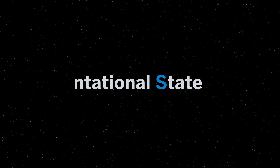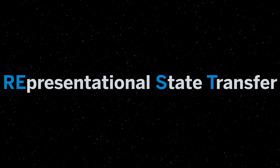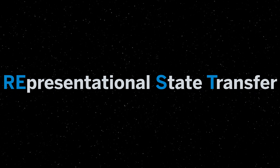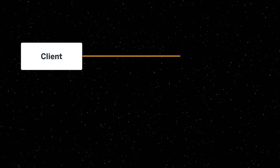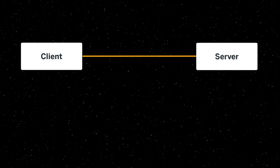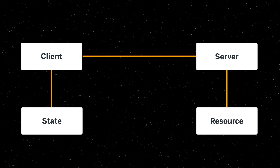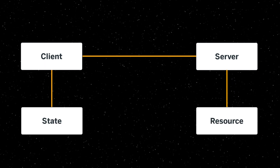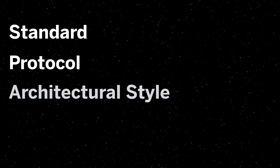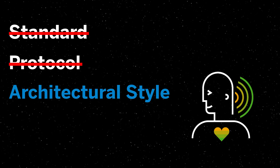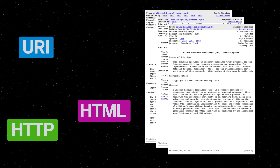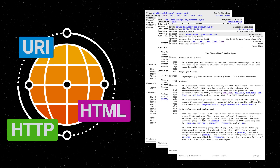REST is an acronym, short for Representational State Transfer. This relates to how HTTP is used as an application protocol that enables a client to interact with a server or application by navigating and changing state of resources via their representations. REST is not a standard and it's not a protocol — it's an architectural style, closely linked to HTTP and other core standards that are the building blocks of the web.